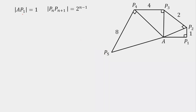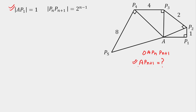We start with two pieces of information: AP1 is one unit, and P(n)P(n+1) is 2 raised to the power (n-1). As the sequence progresses to P(n+1), we get a triangle: triangle A, P(n), P(n+1). To find one of the angles, we need to determine the side AP(n+1). Once we have that side, we can express the angle in terms of n and apply the limit as n tends to infinity.